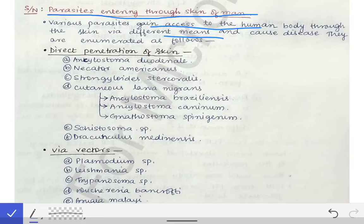We will classify them into two categories. One is those parasites who directly penetrate the skin, and the second is those who need a vector to get transmitted through the skin to the human body.